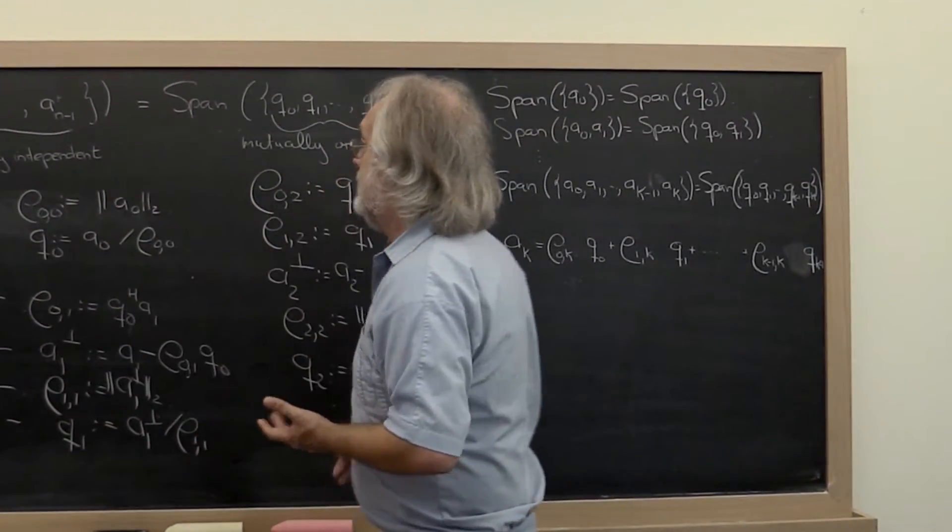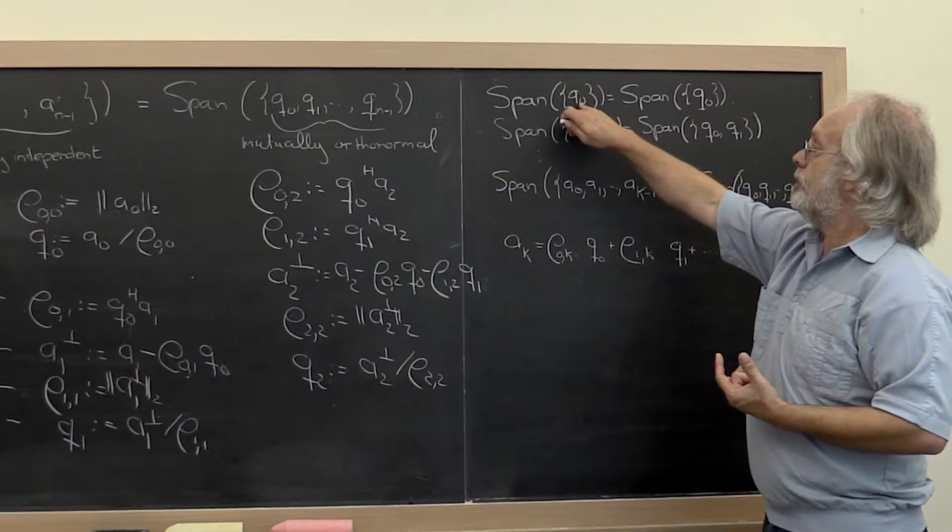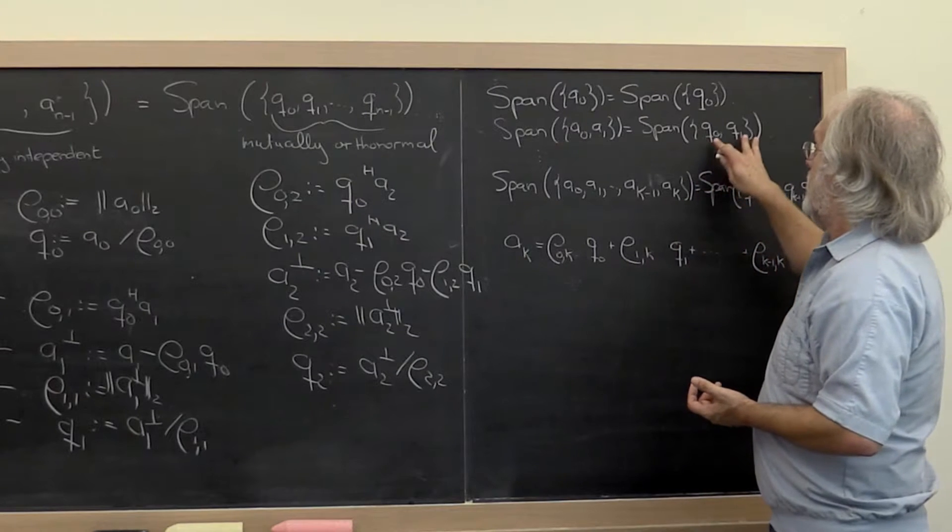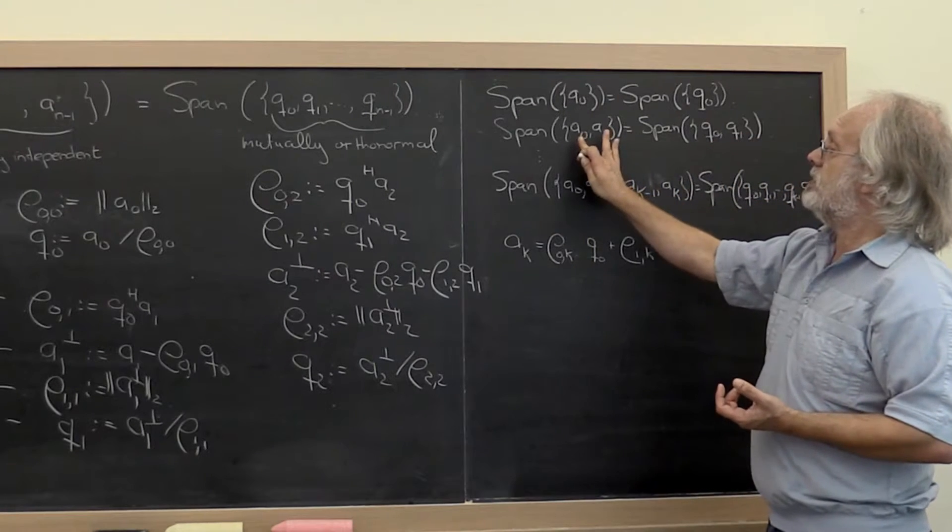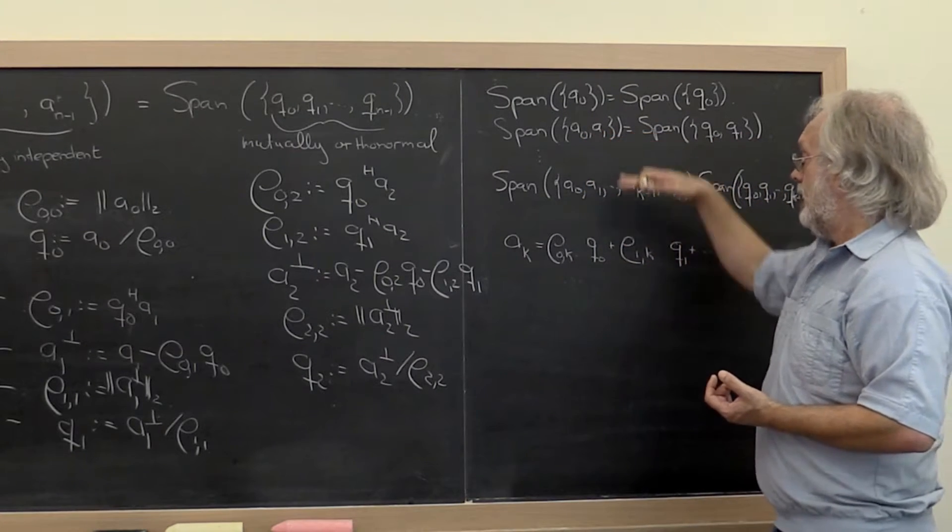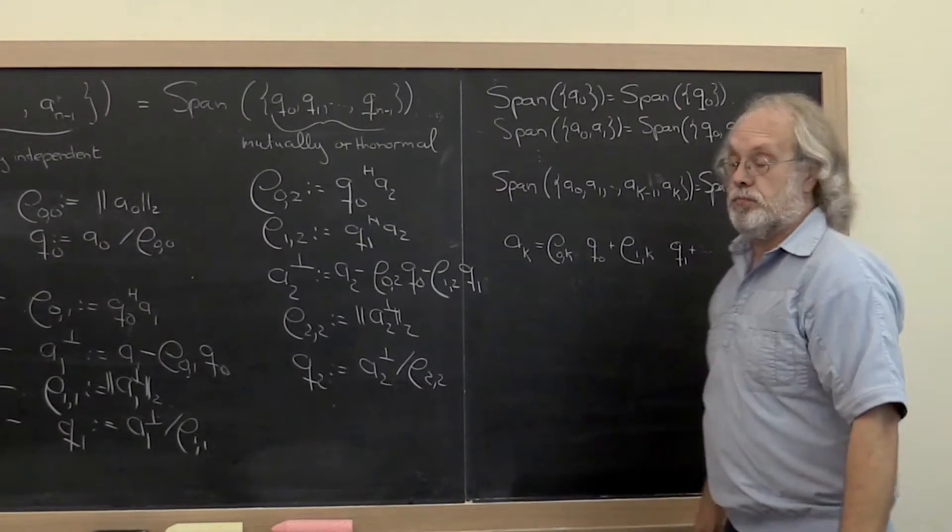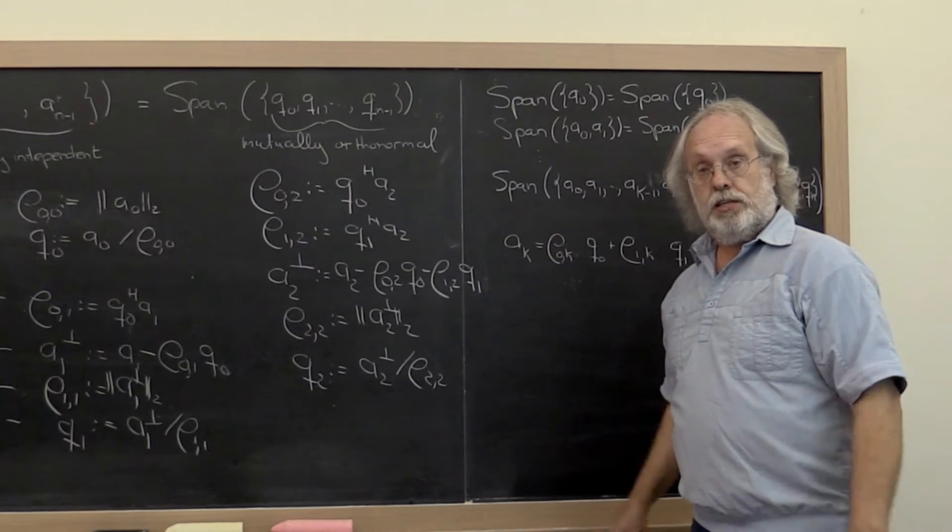And in the same way you can conclude that the span of Q0 is the same as the span of A0. The span of Q0, Q1 is the same as the span of A0, A1, and so forth. And this is just a property of the Gram-Schmidt orthogonalization process.